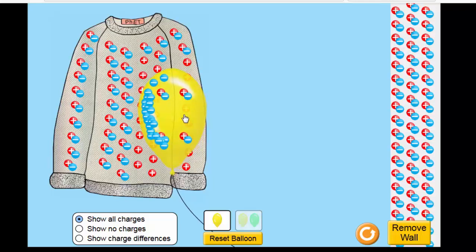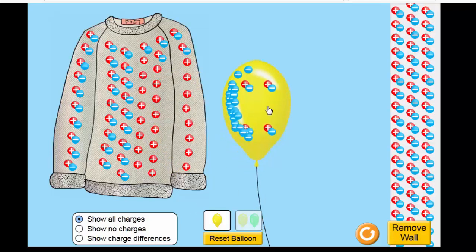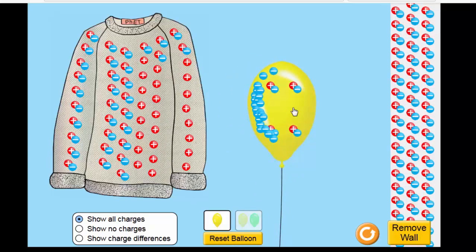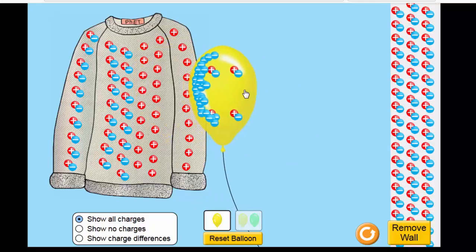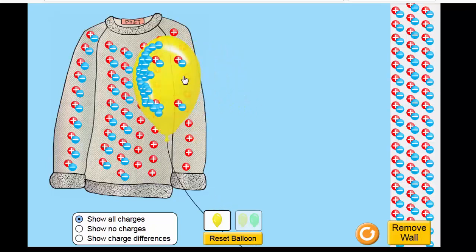That's why it will gain those negative charges. So now the balloon is negatively charged, while the sweater is positive. And hence the balloon attracts the sweater. So this is implication of static electricity.